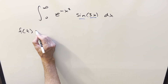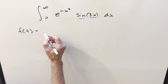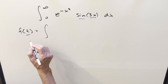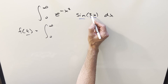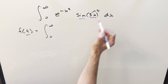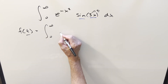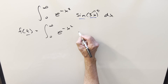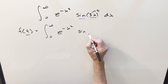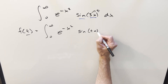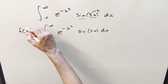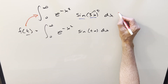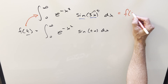We're going to do the exact same technique: Feynman's trick, parameterizing it by creating a t. I'm going to use t for the value 3 right here. So we'll have e to the minus x squared times sine tx as our function f(t). To get back to our answer, we want f(3).